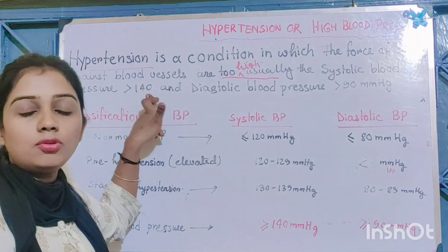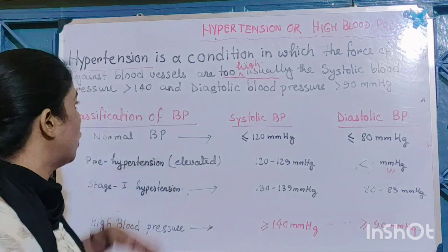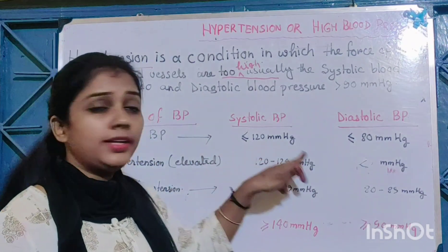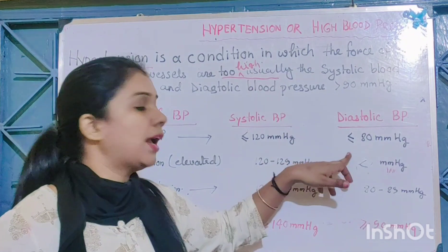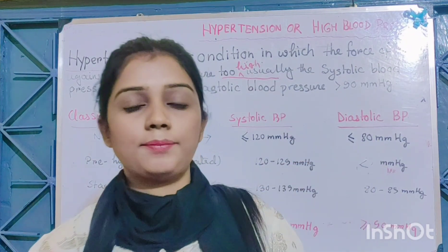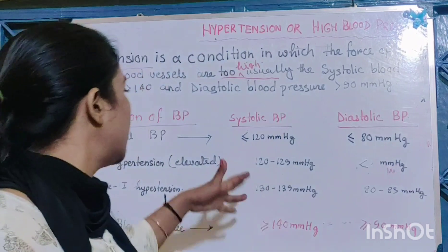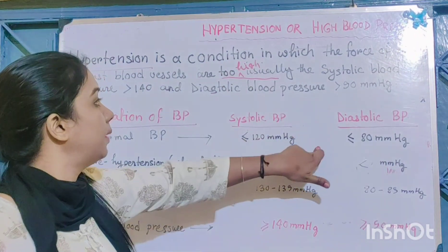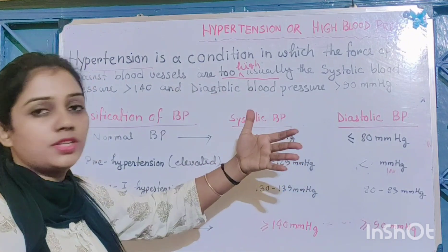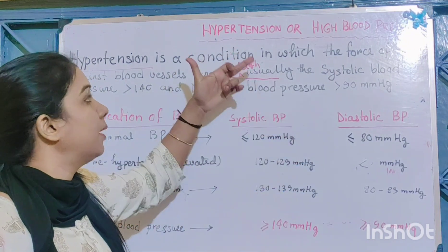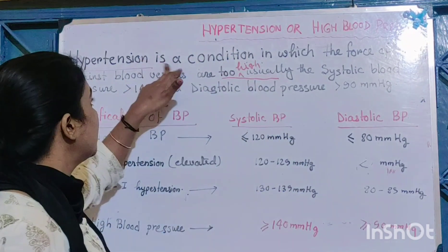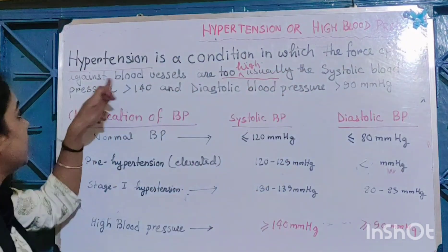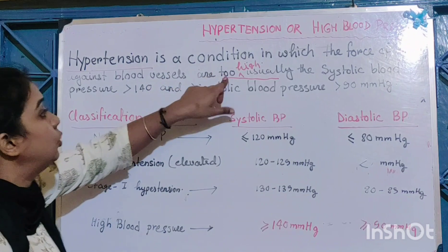Normal blood pressure: systolic blood pressure is 120 mmHg and diastolic blood pressure is 80 mmHg. If the body's blood pressure goes higher than this normal blood pressure, then it is called hypertension.